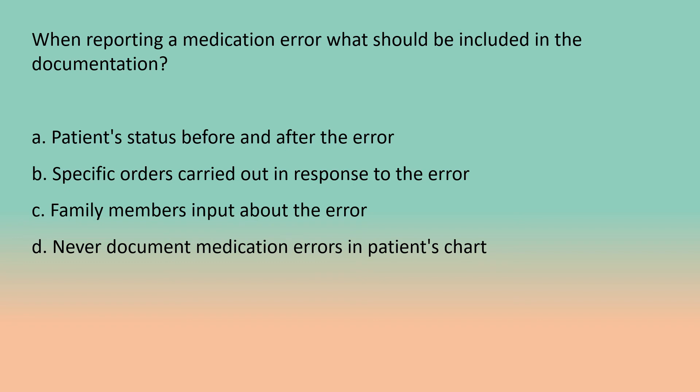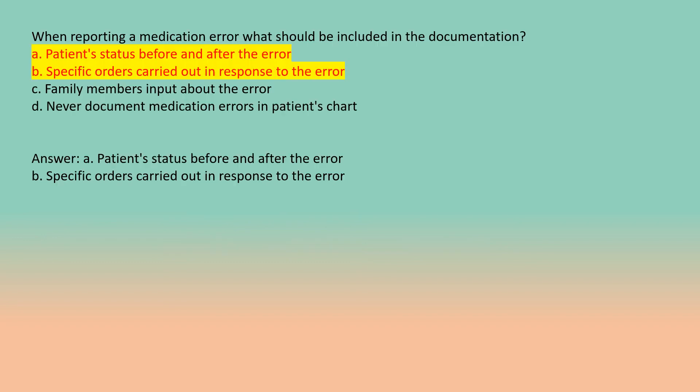When reporting a medication error, what should be included in the documentation? A. Patient status before and after the error. B. Specific orders carried out in response to the error. C. Family members' input about the error. D. Never document medication errors in the patient's chart. Answer: A. Patient status before and after the error, and B. Specific orders carried out in response to the error.